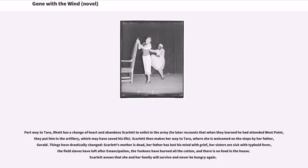Part way to Tara, Rhett has a change of heart and abandons Scarlett to enlist in the army. He later recounts that when they learned he had attended West Point, they put him in the artillery, which may have saved his life. Scarlett then makes her way to Tara, where she is welcomed by her father, Gerald. Things have drastically changed: Scarlett's mother is dead, her father has lost his mind with grief, her sisters are sick with typhoid fever, the field slaves have left after emancipation, the Yankees have burned all the cotton, and there is no food in the house. Scarlett avows that she and her family will survive and never be hungry again.